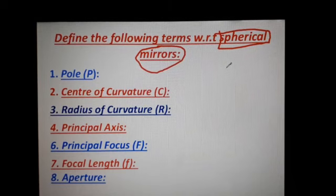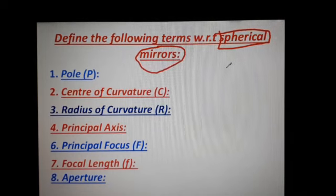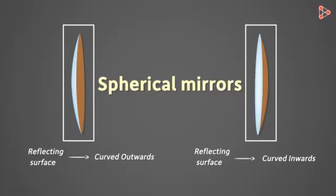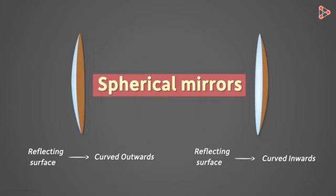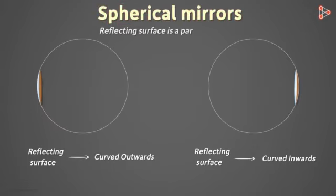The spherical mirror is of two types: concave mirror and convex mirror. A spherical mirror is one whose reflecting surface is part of a sphere. The curve-inward surface which is reflecting is the concave mirror, and the curve-outward surface which is reflecting is known as the convex mirror.